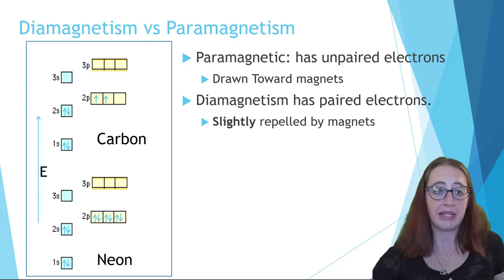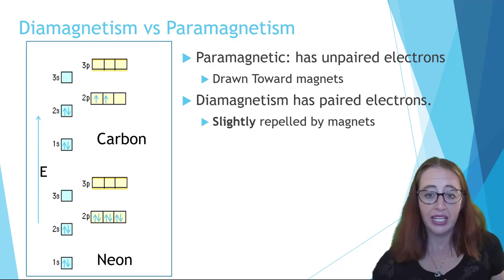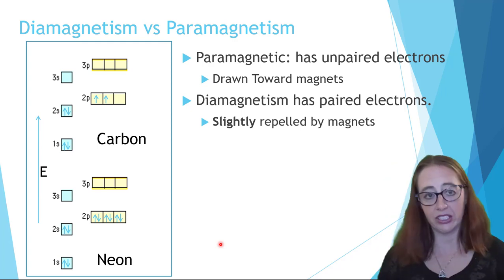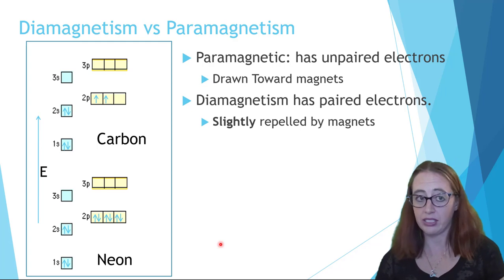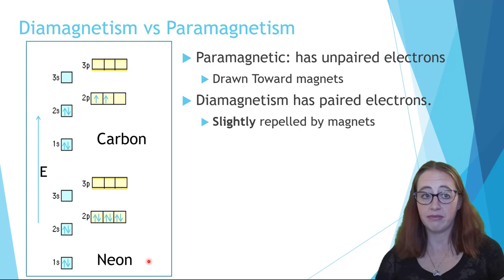Now, I want you to notice something, and I picked carbon very specifically as my example here. You can't tell whether something is paramagnetic or diamagnetic just based on whether it has an even or odd number of electrons, okay? Both carbon and neon have an even number of electrons, right? Including in their valence shell.